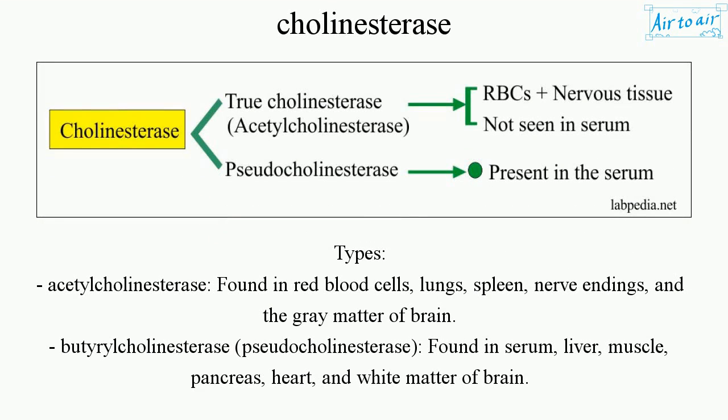Types: Acetylcholinesterase — found in red blood cells, lungs, spleen, nerve endings, and the gray matter of the brain.